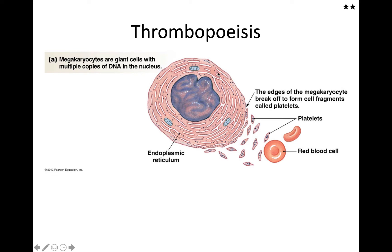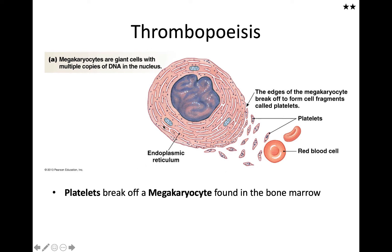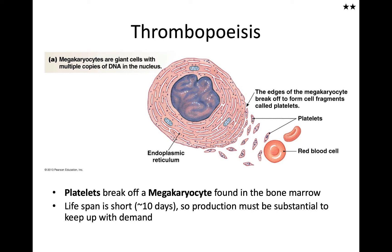Megakaryocytes have their mitochondria, and all of that cytoplasm you see is endoplasmic reticulum. When these cells start producing platelets, little segments of it start to break off, containing proteins made by the endoplasmic reticulum. They are not active when first formed, but they can and quickly will become activated. Their lifespan is very short, so this process is a constant, ongoing process.